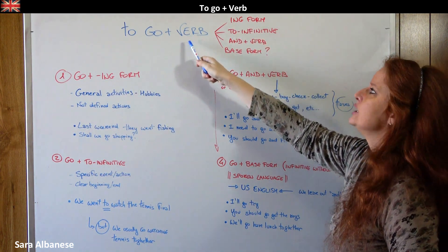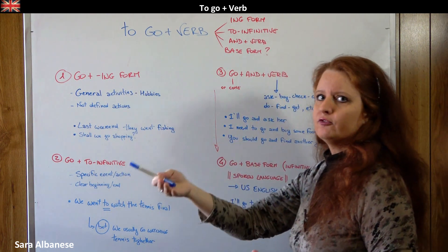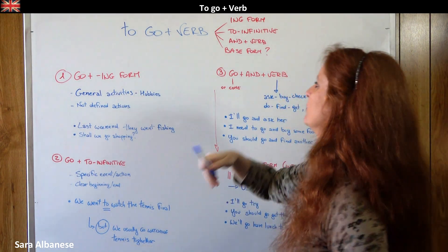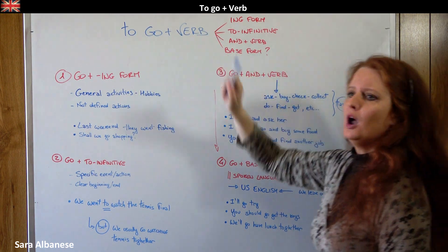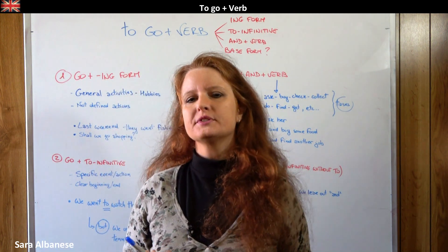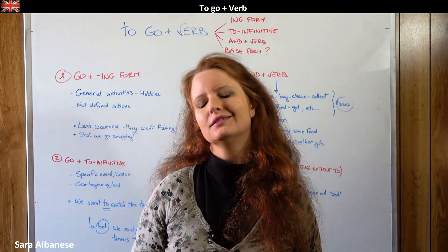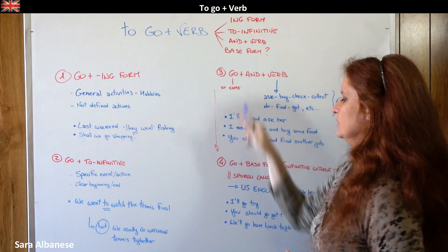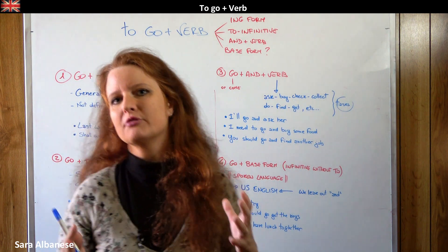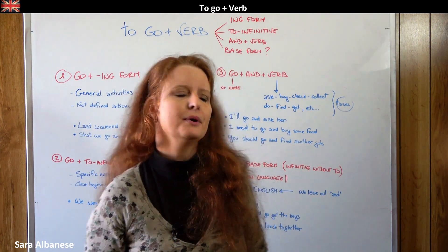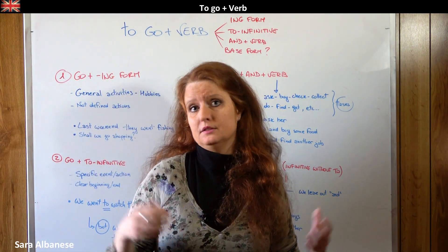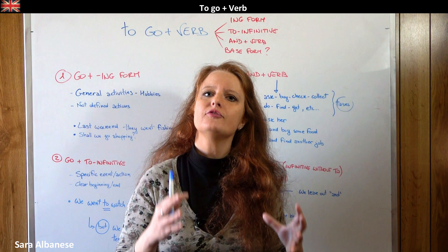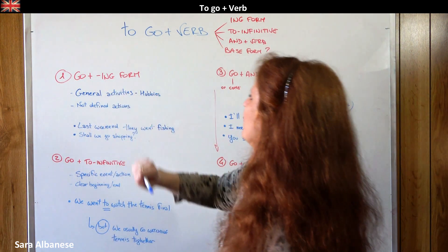For example: 'I go doing something' — the -ing form; 'I go to do something' — the to-infinitive form; 'I go and do something' — go and the other verb; or 'I go do something' — the base form. These forms are basically all used a lot by native speakers, but the last one is grammatically incorrect, though very common especially in the US and spoken language. Each form has a specific context.